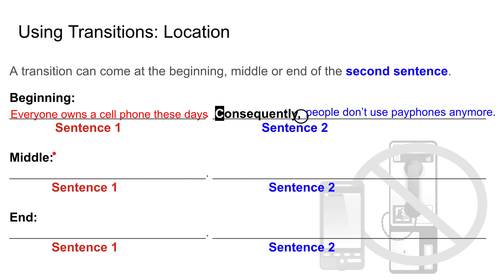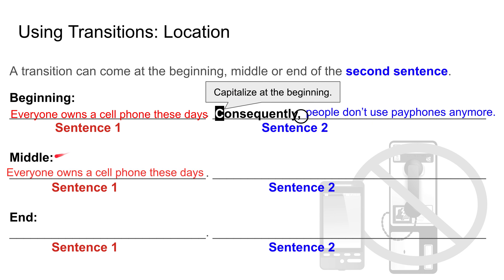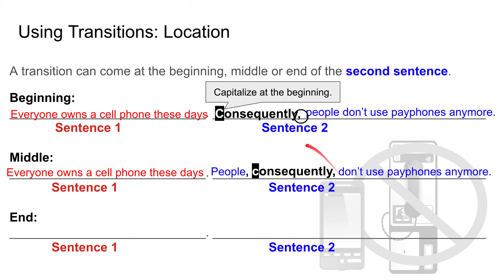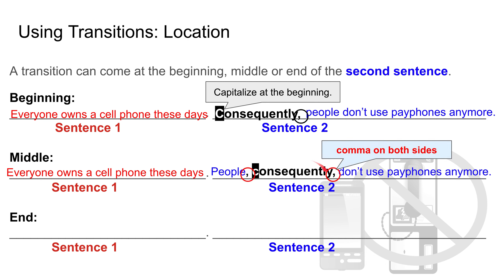We can also put the transition in the middle of the second sentence. For example: 'Everyone owns a cell phone these days. People, consequently, don't use pay phones anymore.' Consequently comes right after the subject, and make sure there are commas on both sides of the transition when placed in the middle.